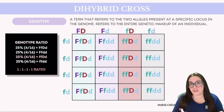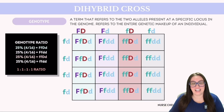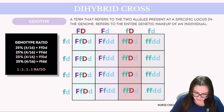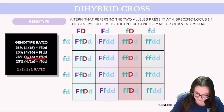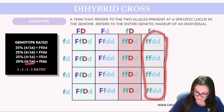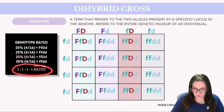Now we want to know our genotypes and phenotypes from these offspring. The genotype distribution is as follows: four out of 16 will be capital F lowercase f capital D lowercase d; four out of 16 will be capital F lowercase f lowercase d lowercase d; four out of 16 will be lowercase f lowercase f capital D lowercase d; and four out of 16 will be lowercase f lowercase f lowercase d lowercase d. The potential genotypes give us a 1:1:1:1 ratio.